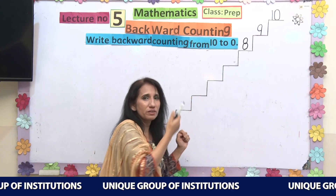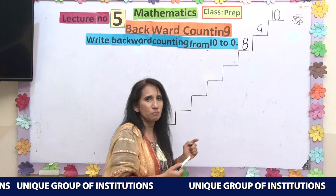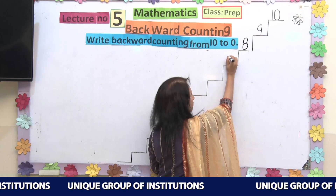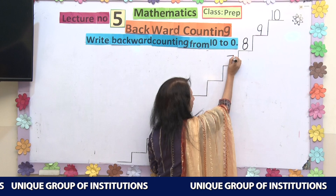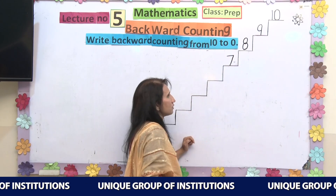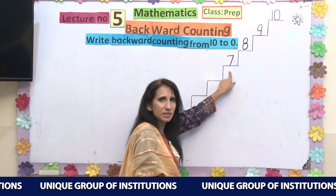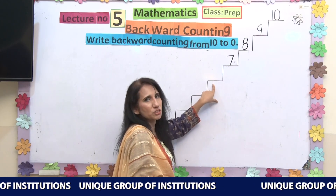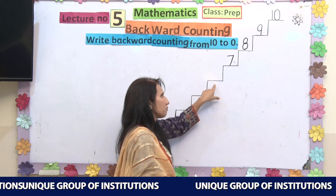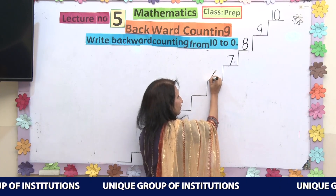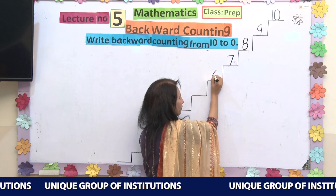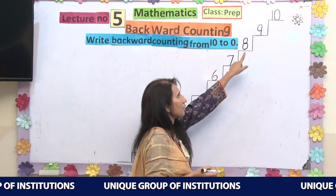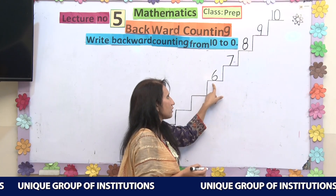What comes before number 8? Before number 8, we have number 7. So write number 7 here. What comes before number 7? Before number 7, we have number 6. On this step, I am going to write number 6. So let's count again: 10, 9, 8, 7, 6. It means we have written till 6.